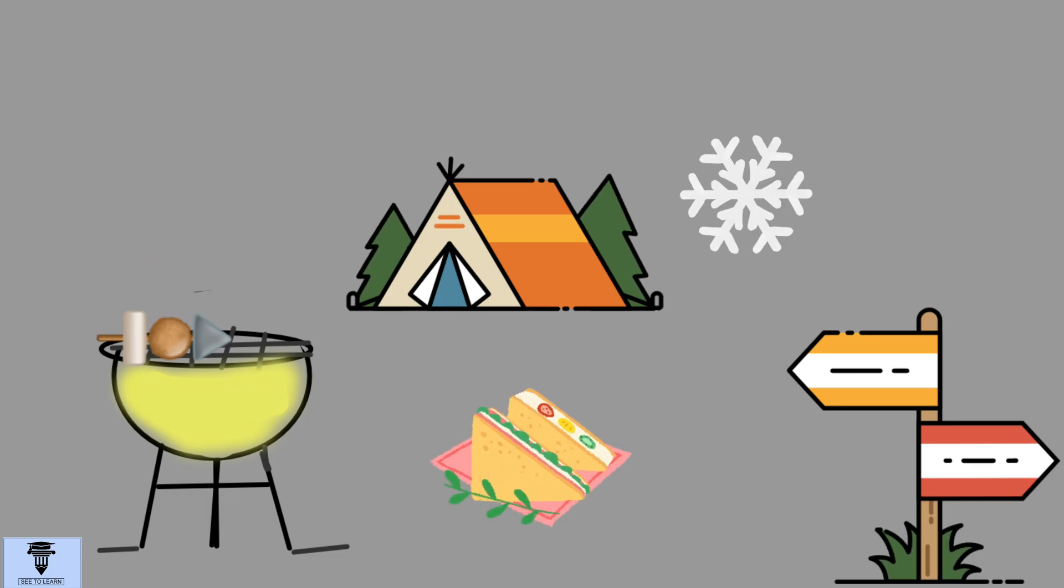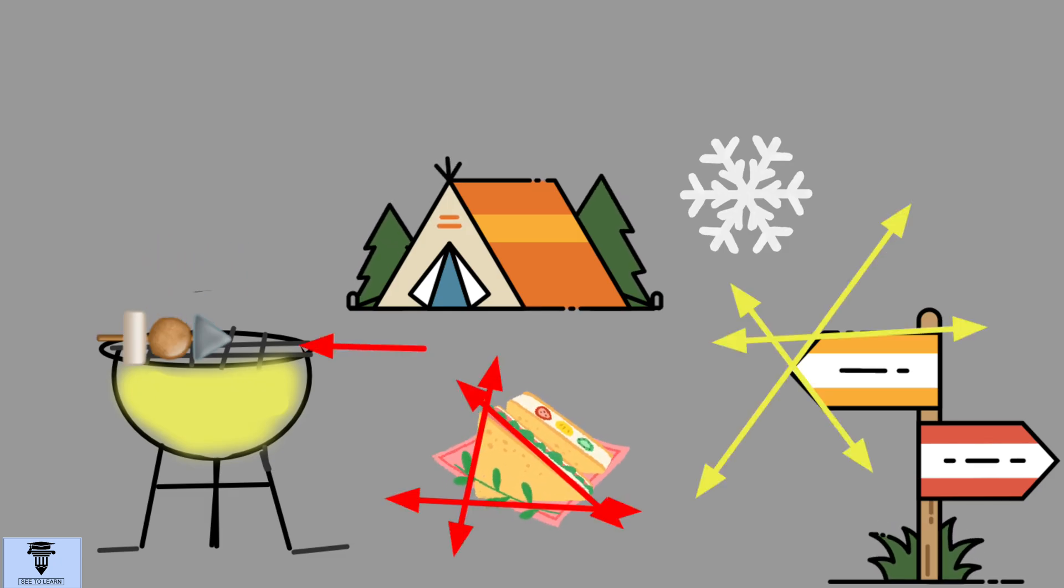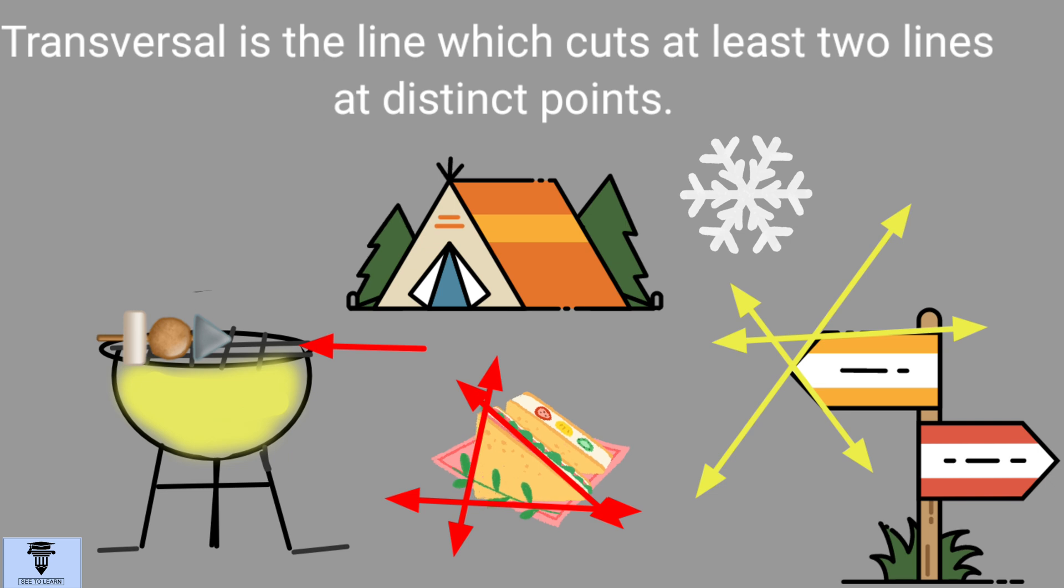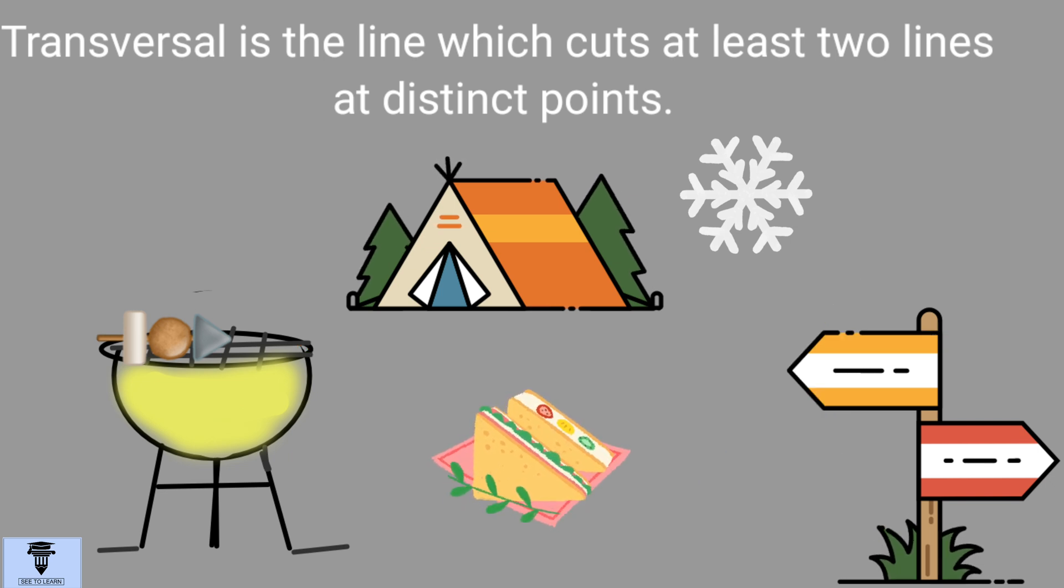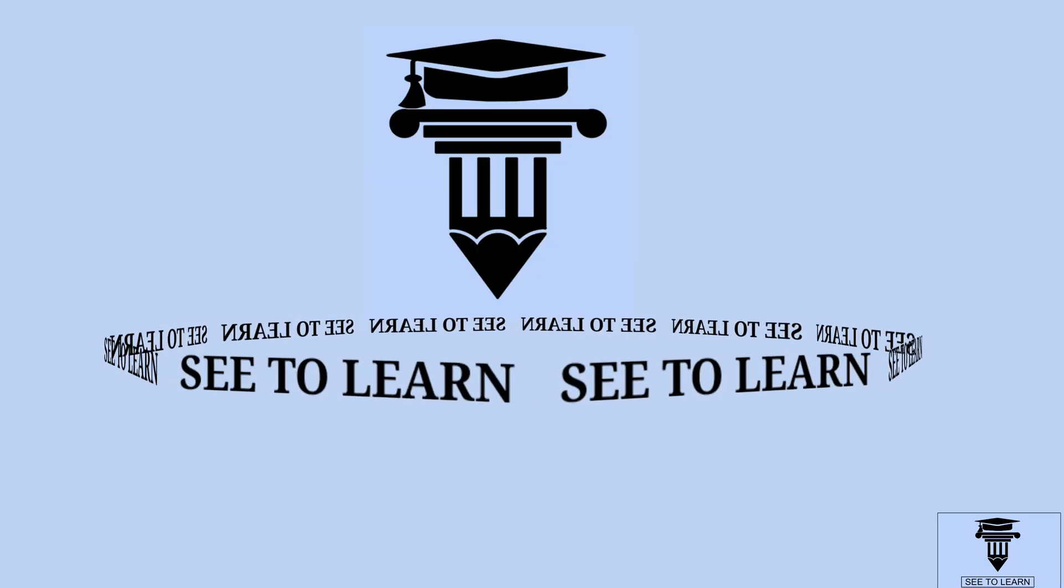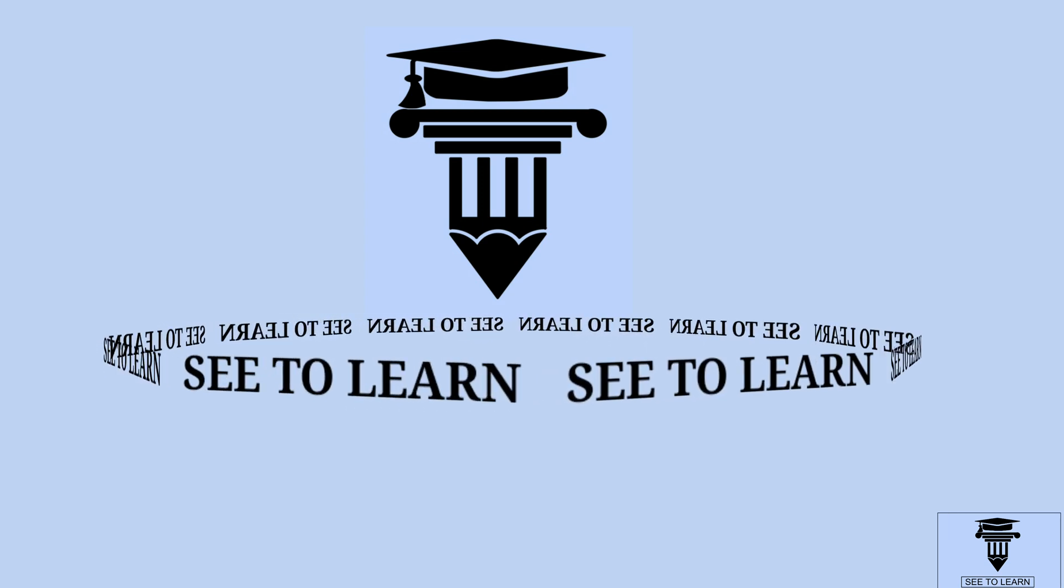Hello everyone! Many times we see lines crossing each other. In such lines, transversal is the special line which cuts at least two lines at distinct or different points. See to Learn in this video gives you a trick to identify the transversal.